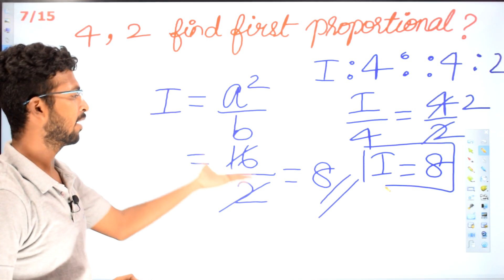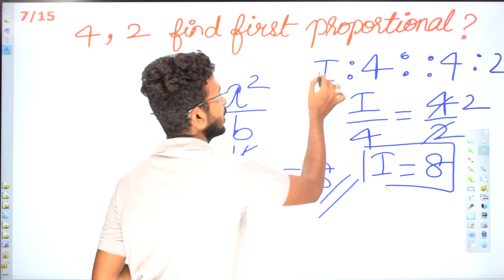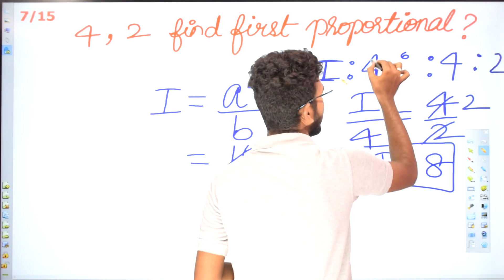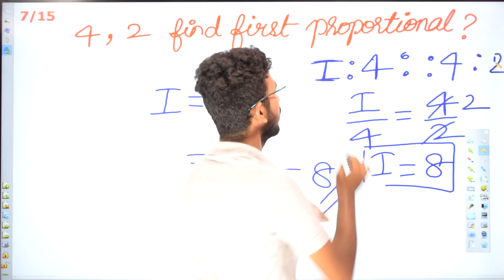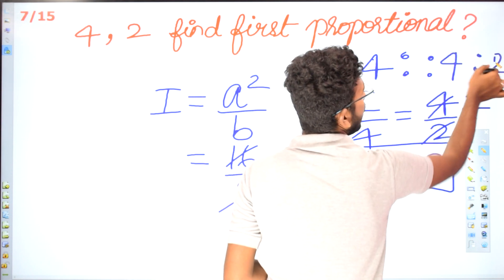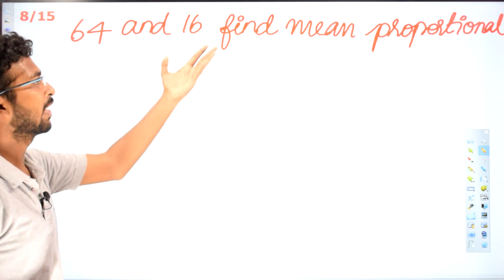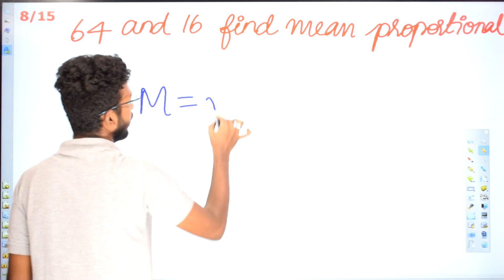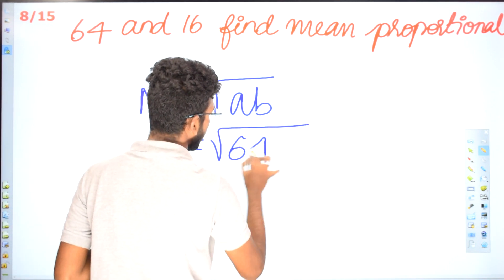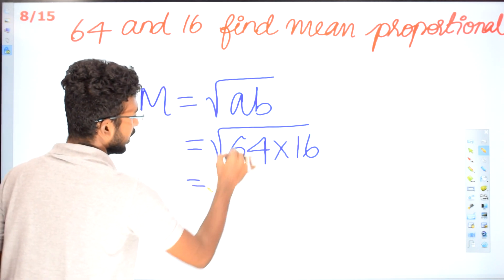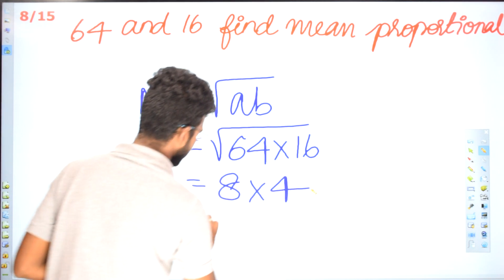Using the direct formula, first proportional is A squared divided by B. For mean proportion, given 64 and 16, mean proportion equals root of AB, which is root of 64 into 16 — root of 1024 — which is 32. So 32 is the answer for this.